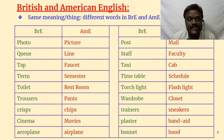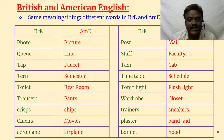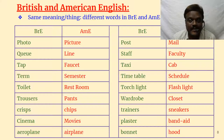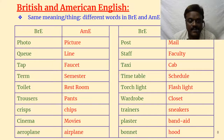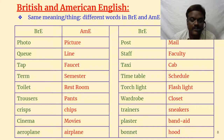Photo (BrE) vs picture (AmE). Queue (BrE) vs line (AmE) — India uses both. Tap (BrE) vs faucet (AmE). Term (BrE) vs semester (AmE) — now we have adopted the semester system in India. Toilet (BrE) vs restroom (AmE). Trousers (BrE) vs pants (AmE) — Indians used to say trousers but now we say pants. Crisps (BrE) vs chips (AmE) — thin sliced potato snacks. Cinema (BrE) vs movies (AmE). Aeroplane — A-E-R-O-P-L-A-N-E in British English — vs airplane — A-I-R-P-L-A-N-E in American English.